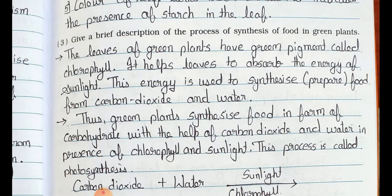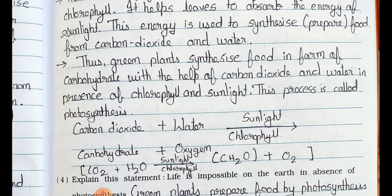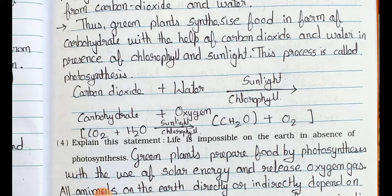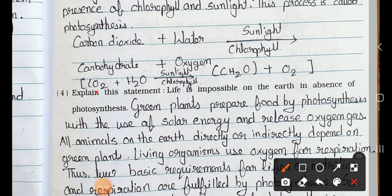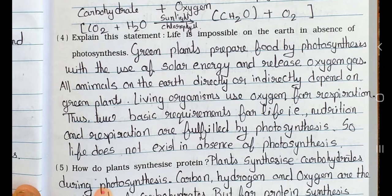Question number three: Give a brief description of the process of synthesis of food in green plants. Answer: The leaves of green plants have a green pigment called chlorophyll. It helps leaves to absorb the energy of sunlight. This energy is used to synthesize food from carbon dioxide and water. Green plants synthesize food in the form of carbohydrates with the help of carbon dioxide and water in the presence of chlorophyll and sunlight. This process is called photosynthesis. The chemical equation is: CO2 + H2O → (in presence of sunlight and chlorophyll) → CH2O (carbohydrate) + O2.